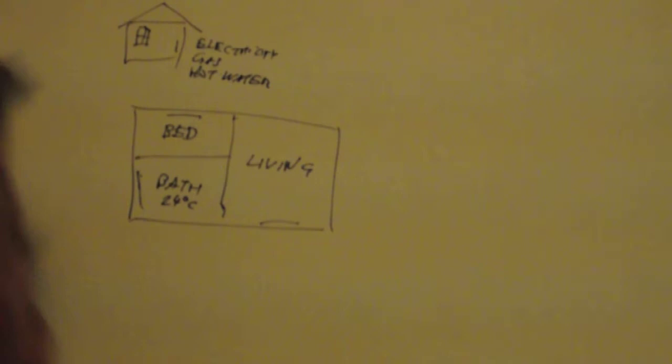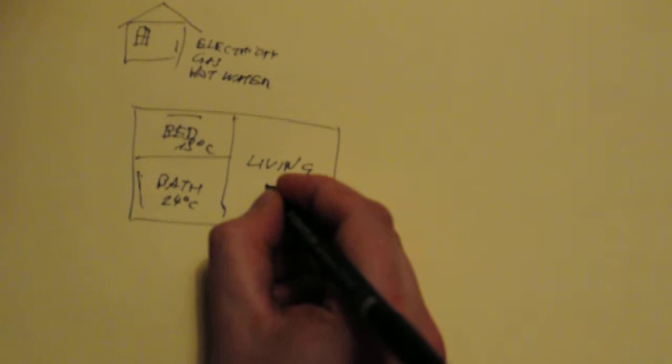In a bedroom you may want 19 degrees because lower temperature is good for sleeping. In a living room we may have more average temperature like 22 degrees, which is completely enough to read a book or watch TV.